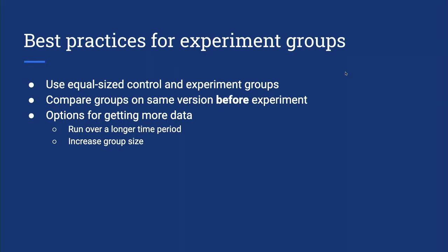Some best practices for experiment groups: use equal-size groups. One thing we see is that at the experiment end there's some weird result we didn't expect — group B is slower at the 90th percentile. The way to address this is before the experiment starts, pick the groups without changing anything and see if group B was different before the experiment started. We call it a pre-period. If the experiment's going and you need more data, you can just keep running over a longer time period, or increase the group size — those are the big options. One thing to consider before increasing group size is again running a pre-period.